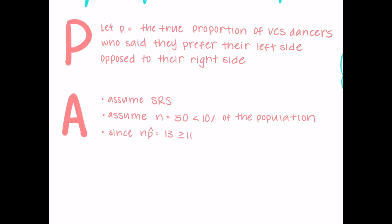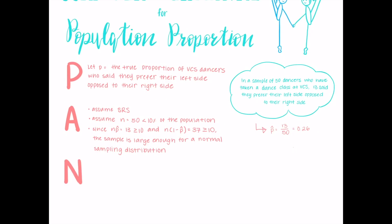Lastly, since nP hat equals 13 and n times 1 minus P hat equals 37, and they are both greater than 10, we assume that the sample is large enough for a normal sampling distribution.